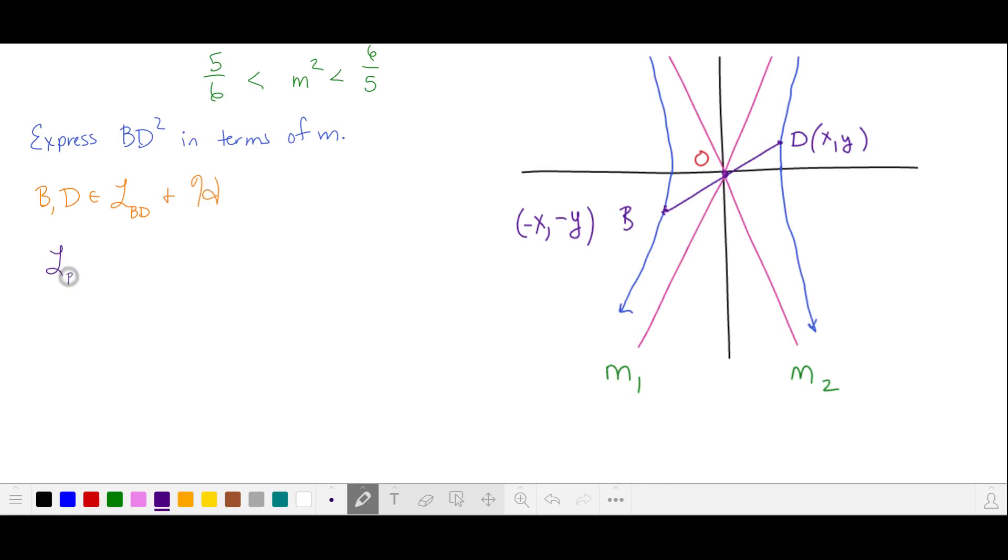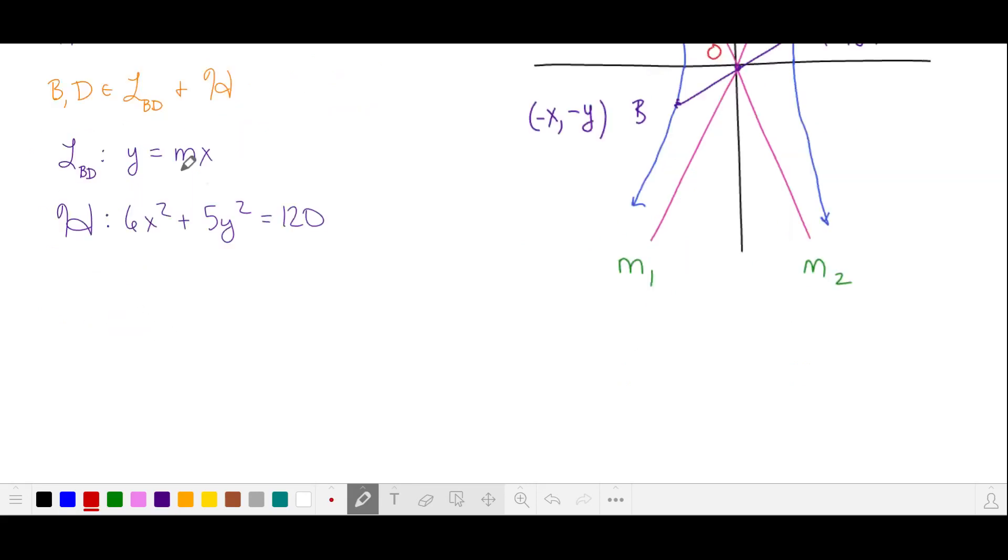The line that passes through B and D, since it passes through the origin, can be written like this, where m has the bounds that we found earlier. And we have the equation for the hyperbola that we found earlier. So first let's substitute for y in our hyperbola equation, and we'll solve for x squared. We can do the same thing, this time substituting for x squared in our equation. x over here is y over m, and then we'll solve for y squared.